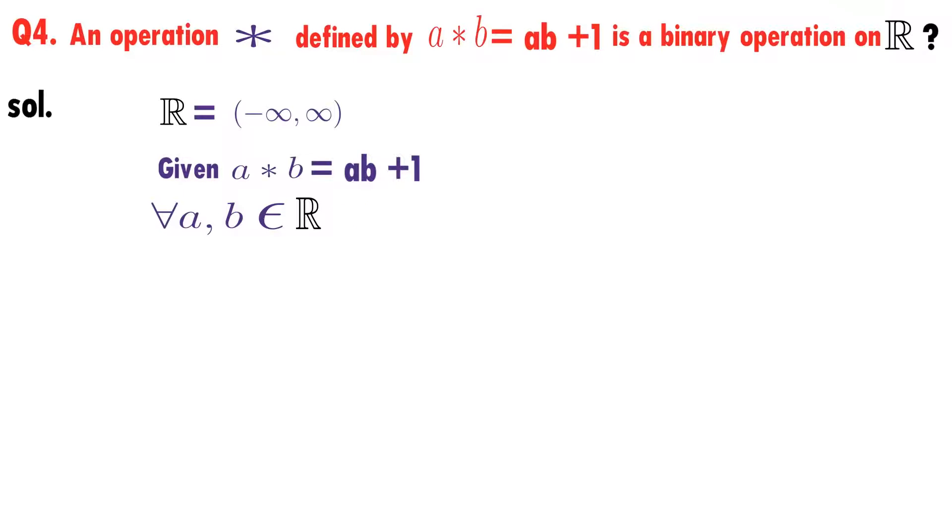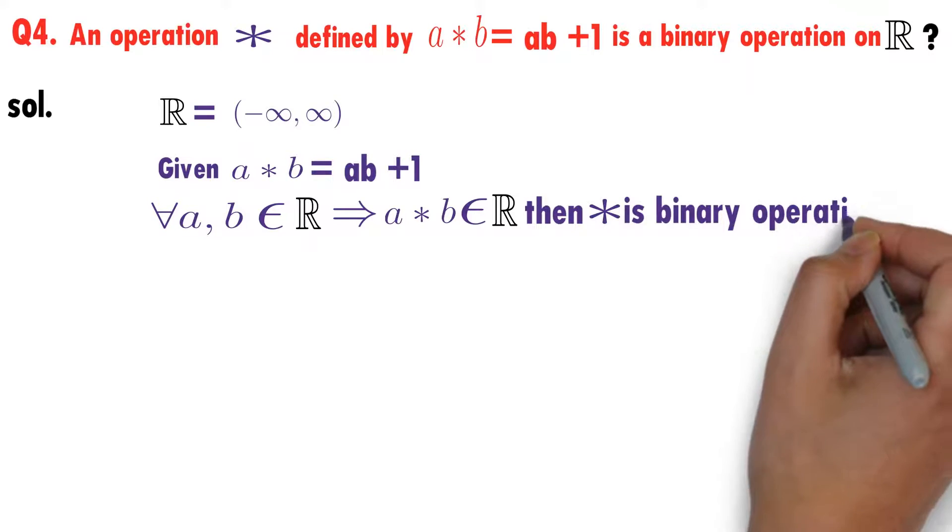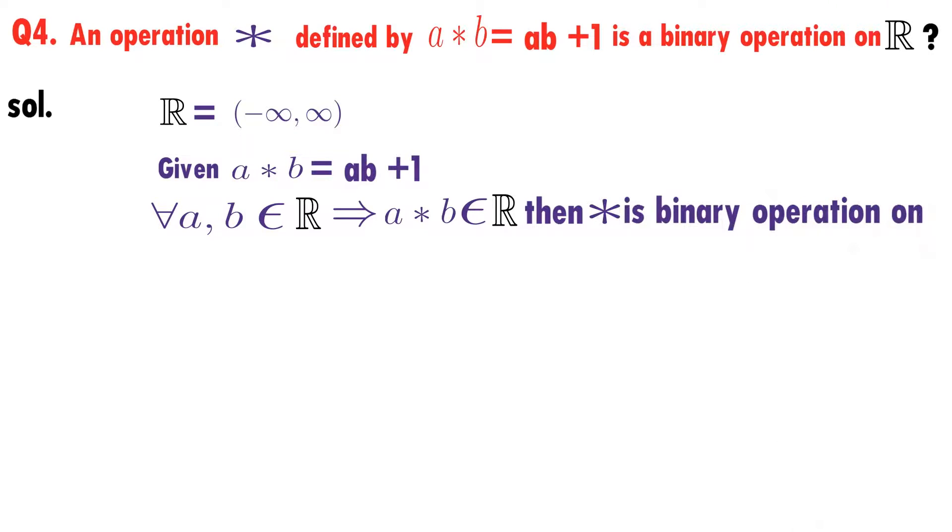Given that a * b equals ab + 1. We know that for every a, b belongs to ℝ implies a * b belongs to ℝ, then * is a binary operation on real numbers. Now I'll take two real numbers